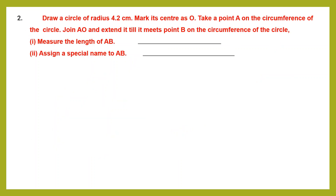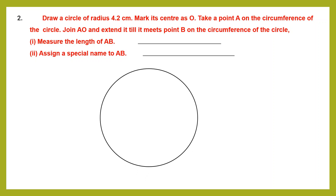Question 2: Draw a circle of radius 4.2 centimeters. Take your compass, measure 4.2 centimeters, and draw a circle. Mark its center as O. Take a point A on the circumference and join A to O — this is the radius, 4.2 centimeters. Now extend this line until it meets point B on the circumference of the circle.